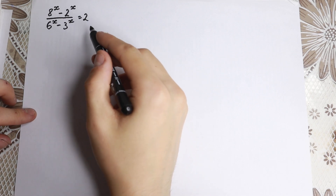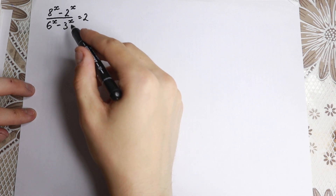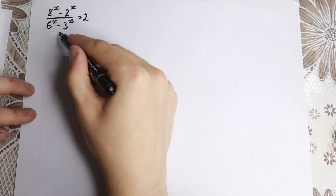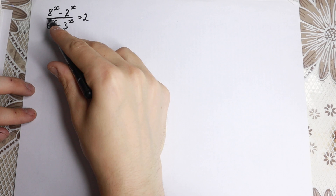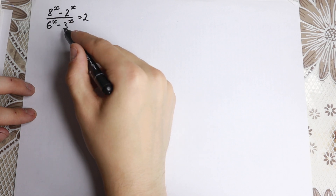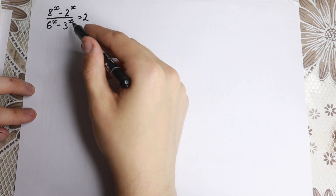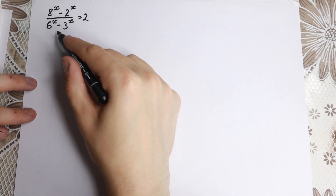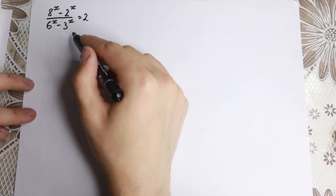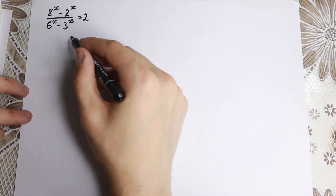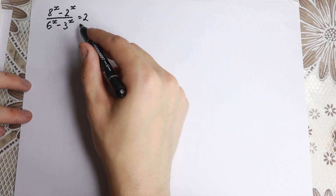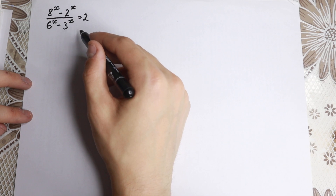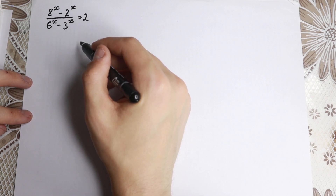We have this exponential equation with x and different bases: 8, 2, 6, 3. Specifically, 8 to the x minus 2 to the x in the numerator, all over 6 to the x minus 3 to the x in the denominator, and it equals 2.